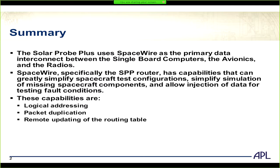Solar Probe Plus uses SpaceWire as the primary data interconnect between the single board computers, the avionics, and the radios. The SpaceWire router has capabilities that greatly simplify spacecraft test configurations, simplify simulation of missing spacecraft components, and allow injection of data for testing fault conditions. The capabilities we're utilizing are the logical addressing capabilities of SpaceWire, which is a standard feature, packet duplication — a special feature of our Goddard SpaceWire router — and remote updating of the routing table.